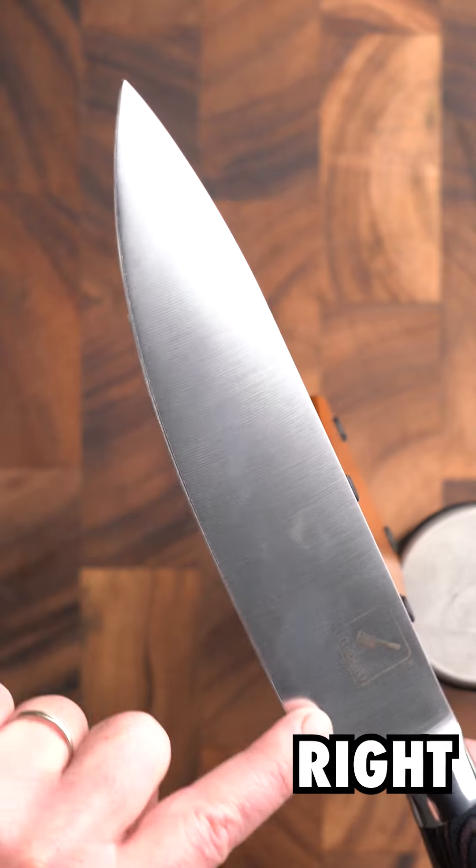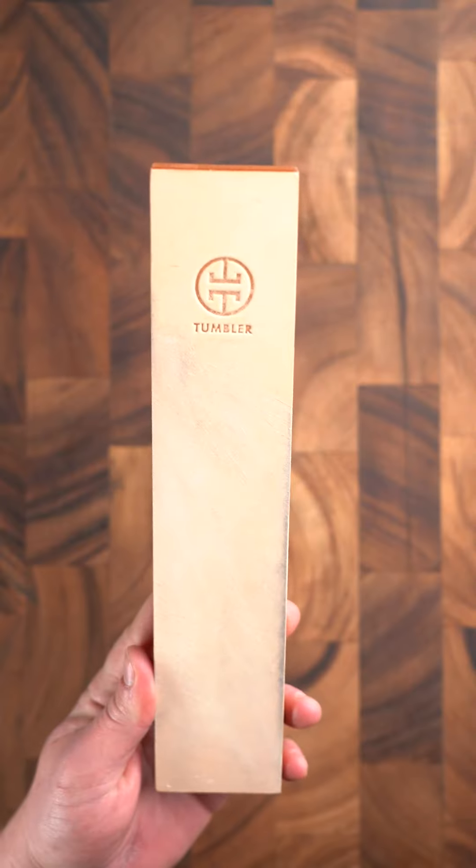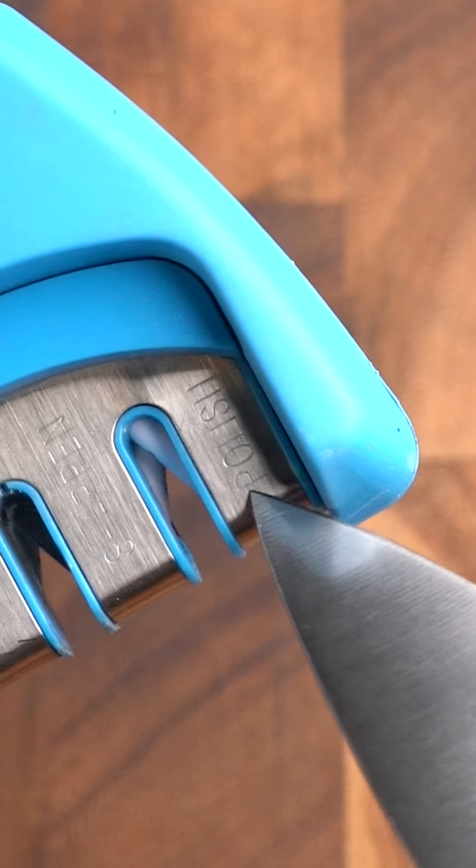These metal particles have already formed on the edge. I can't really tell the difference with this one. I'm gonna polish the edge with the leather strop and with the polishing section of the pull through.